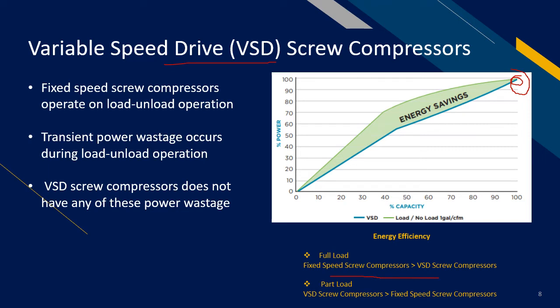However, for part load, VSD compressors have much better energy efficiency compared to fixed compressors. Fixed compressors operate on load-unload operation. During the switching from loading to unloading, transient power wastage will occur. Also, during the unloading phase, approximately 30% of power is still being consumed. VSD screw compressors, however, do not have any of these wastages, as VSD compressors will adjust their speed accordingly based on demand requirements.